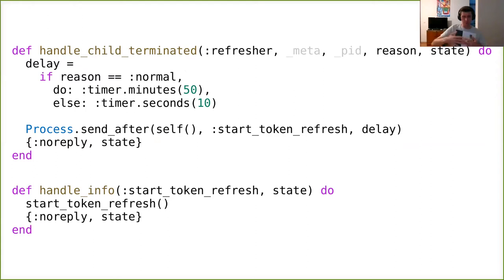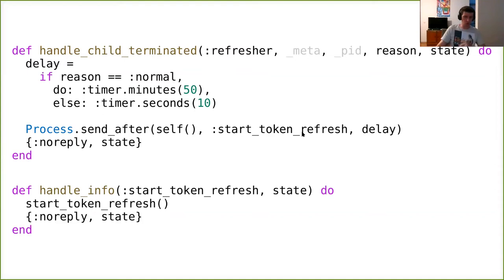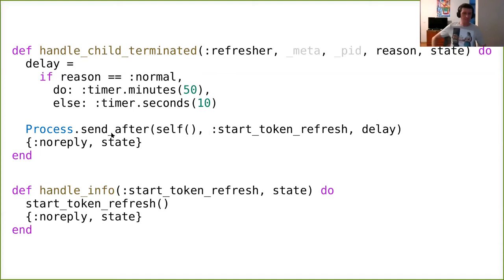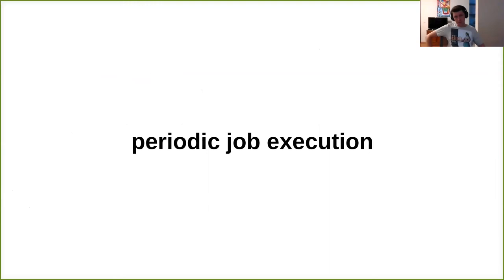When the refresh process terminates, we enqueue the next one. The delay before starting the next refresh depends on whether this one succeeded: if it obtained the access token we start the next one in 50 minutes (the token expires in 60, so we want a buffer); if there was an error, we use 10 seconds as a delay. I compute this delay depending on the exit reason, send myself a message in the future, then handle that message by invoking start_token_refresh. This is essentially a periodic job executor with a variable interval.